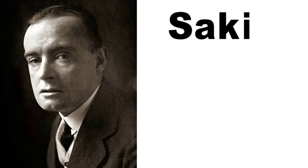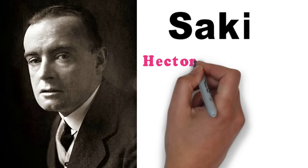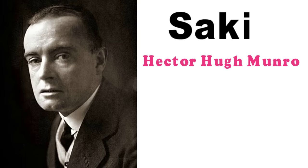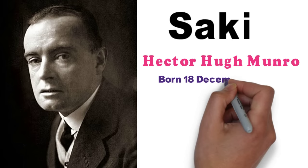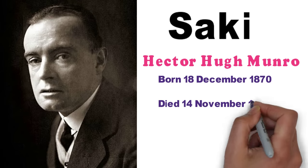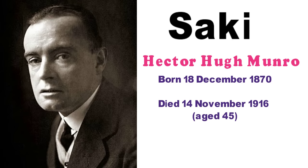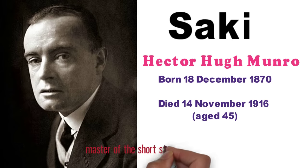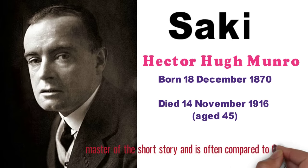A Shot in the Dark was written by Saki. What is Saki's real name? Hector Hugh Munro. But his pen name is Saki. He was born on 18th December 1870 and died on 14th November 1916. He died at the age of 45. He was a British writer.